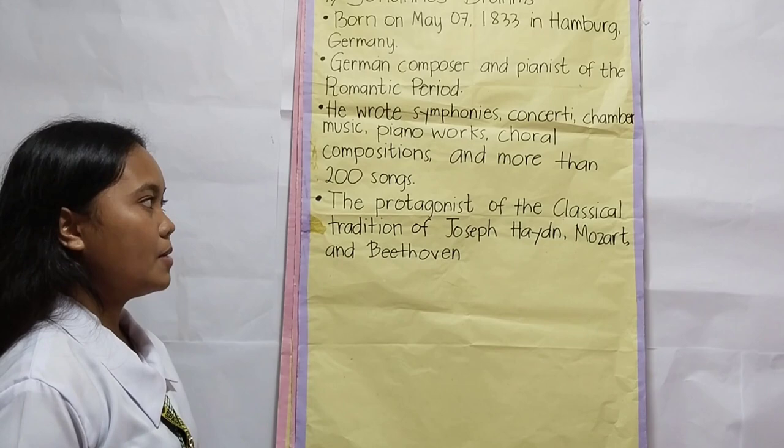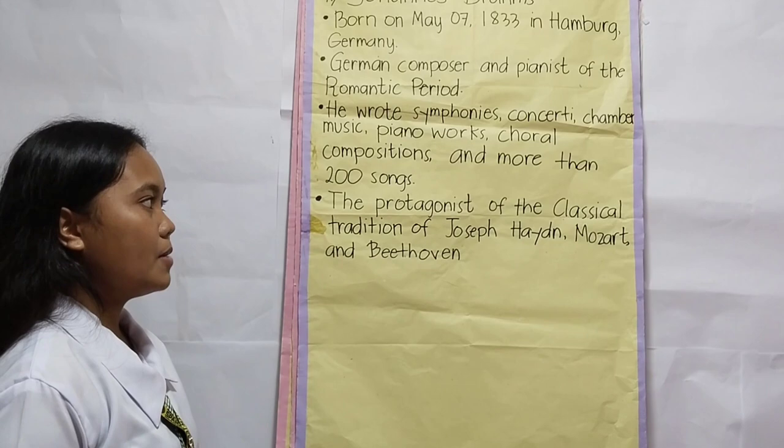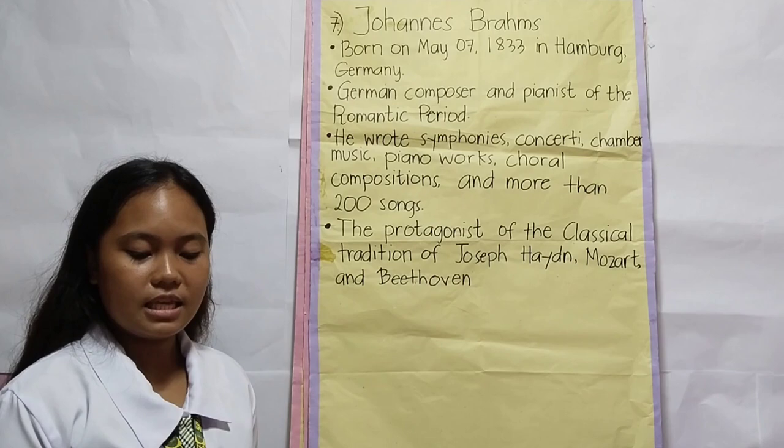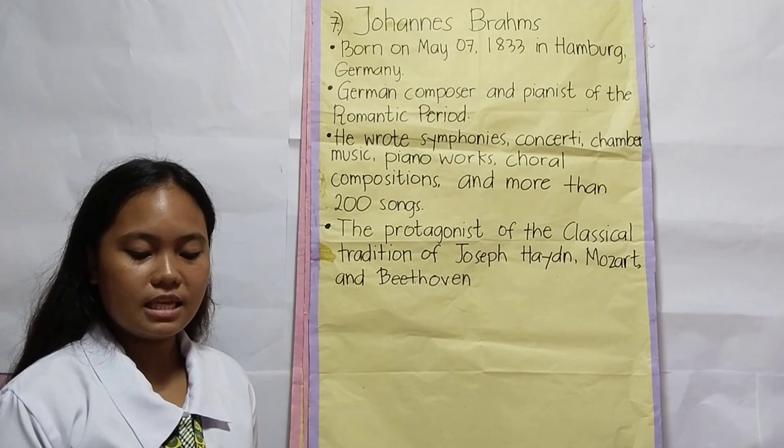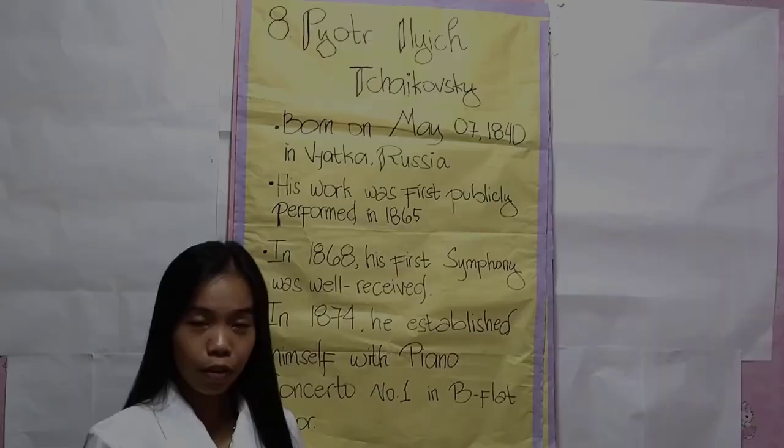Brahms was a proponent of the classical tradition of Joseph Haydn, Mozart, and Beethoven. Due to his feeling that he was a posthumous musician, and also because his music is rooted in the structures and compositional techniques of the Baroque and classical masters.